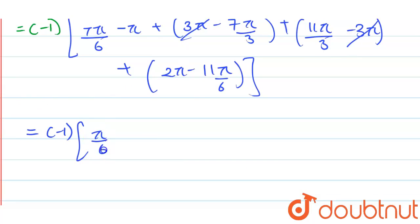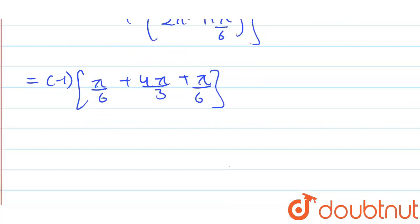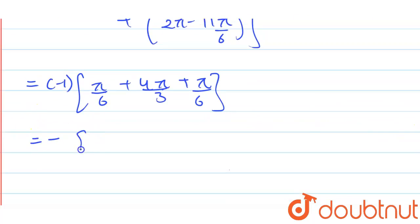Minus 1 times pi by 6, plus 4 pi by 3, plus pi by 6 here. So which gives you minus pi plus 8 pi plus pi.